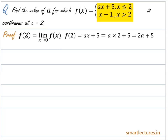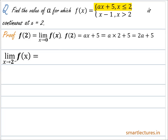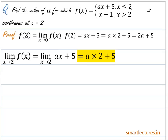Let's first calculate the left-hand limit. The left-hand limit is limit as x approaches 2 from the left of f(x). Since f(x) = ax + 5 when x is less than 2, the left-hand limit becomes limit as x approaches 2 from the left of ax + 5, which equals a×2 + 5 = 2a + 5.